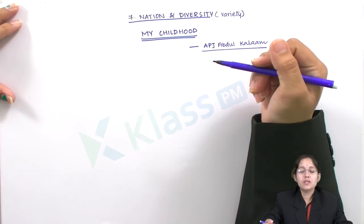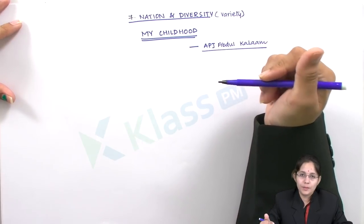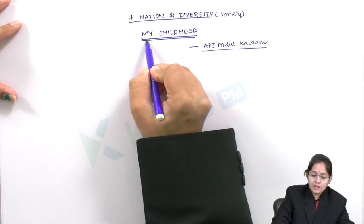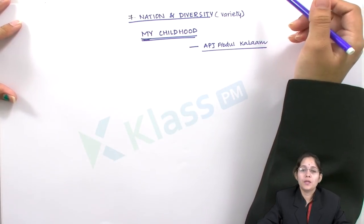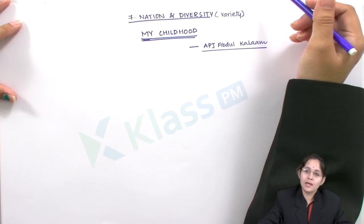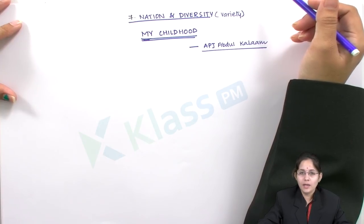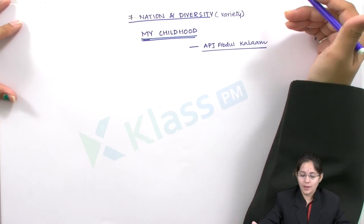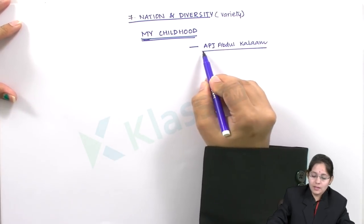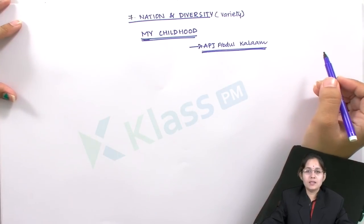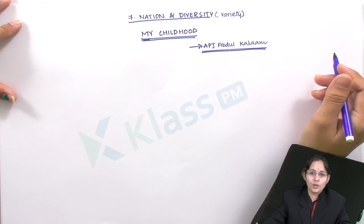Under this unit, the first lesson is 'My Childhood.' Whose childhood? Who is the reference to the pronoun 'my' used here? Let us first understand about the author of this lesson, and then we will learn in detail about the entire lesson. The author of this lesson is Dr. A.P.J. Abdul Kalam — I guess this name is very much familiar to all of you.